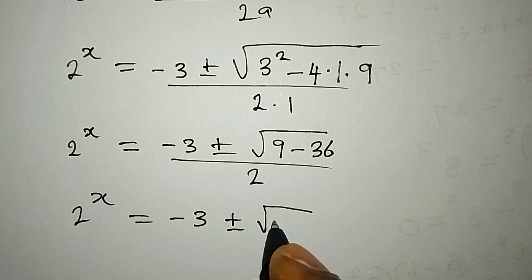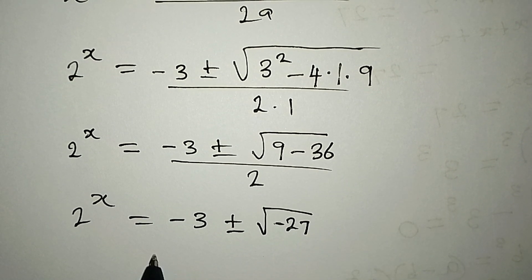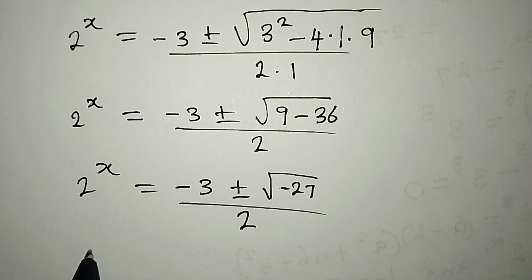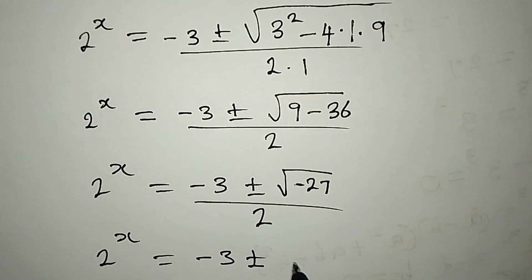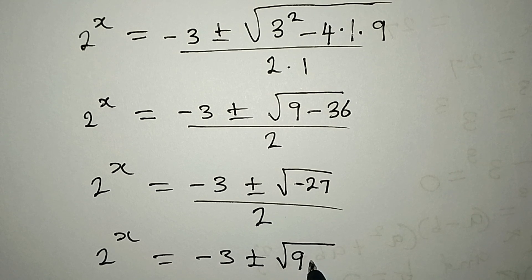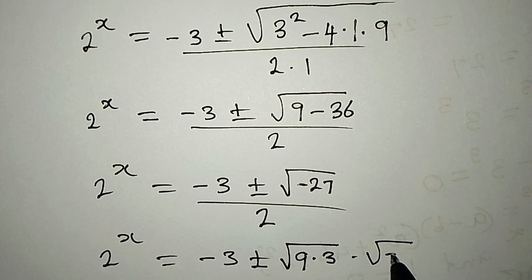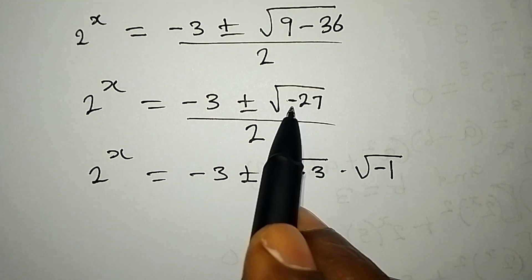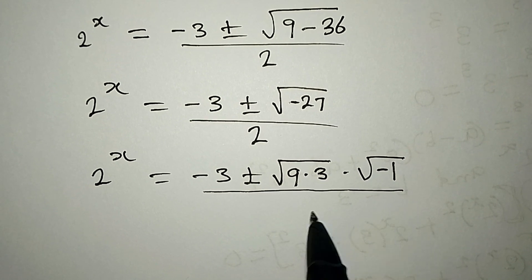So we have negative 27, because 9 minus 36 gives us negative 27, and this is over 2. To continue, 2 to the power of x equals minus 3 plus or minus square root of negative 27. We can write the square root of 27 as 9 times 3, then multiply by square root of negative 1. I have not changed anything — I just brought out the negative, and 27 is still 9 times 3, all over 2.